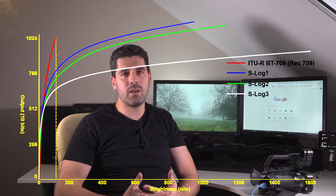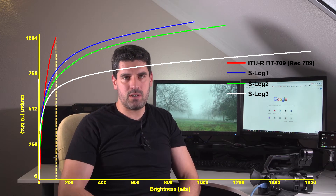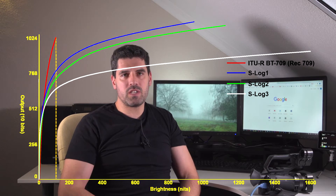Logarithmic gamma curves are different for each manufacturer. We have S-Log gamma curves for Sony, C-Log for Canon, and V-Log for Panasonic. There's a typical discussion — which for me makes no sense — about which gamma curve is better. It doesn't make sense because you cannot apply a C-Log gamma curve from Canon to a Sony sensor. It's basically each manufacturer's way to get the best picture quality from their specific sensors.